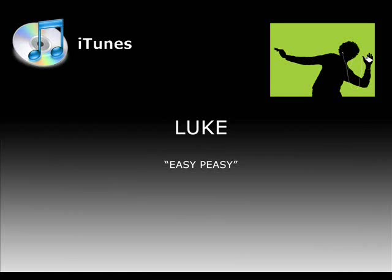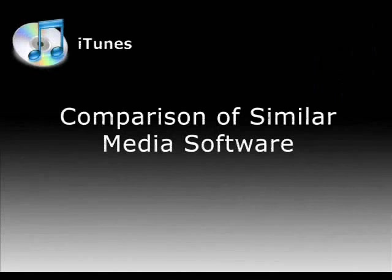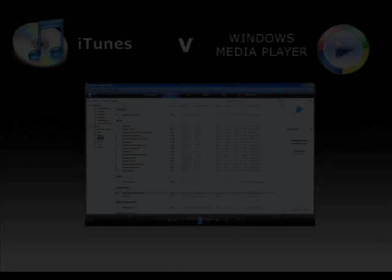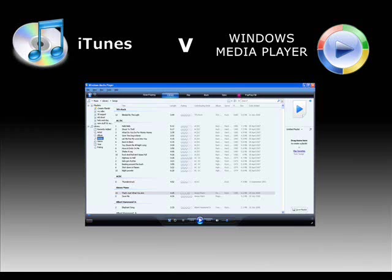In order to assess the usability of iTunes, we decided to compare it to similar software available for the downloading of music from CD to digital format. The Windows Media Player software can be easily navigated along the top section of the interface; the user is given the option to navigate the library, rip music from a CD, burn music onto a CD, or sync music with an MP3 player device similar to the iPod. These are simple options that would allow a novice user to easily work through the task set in this experiment.